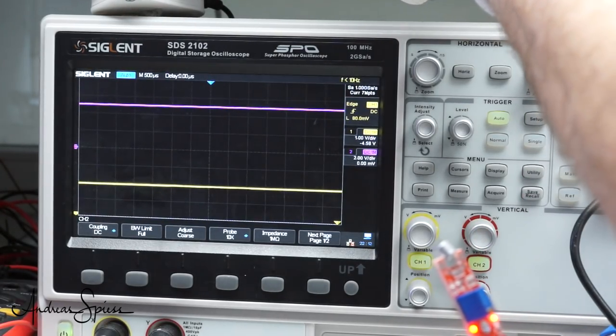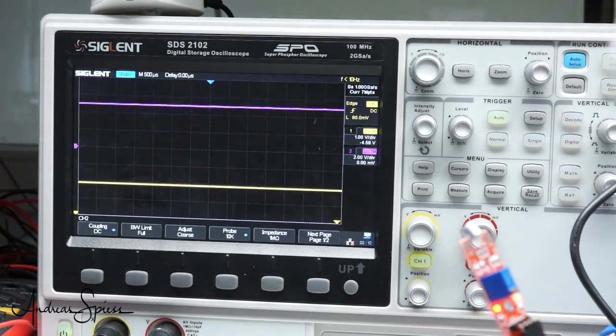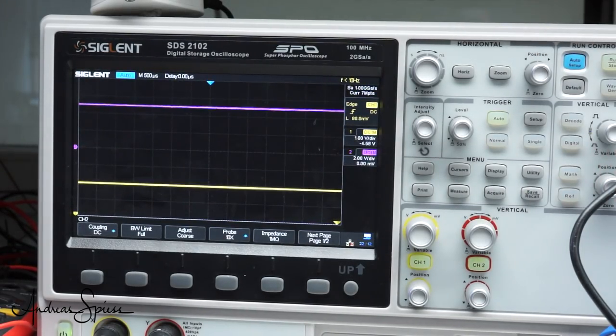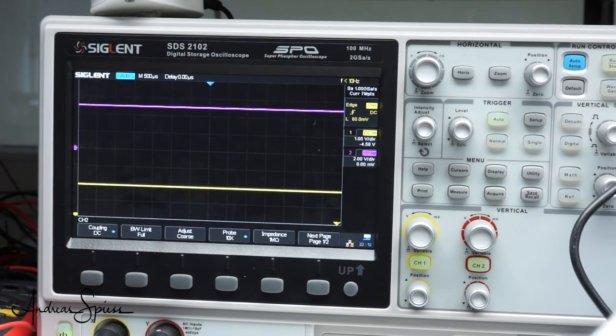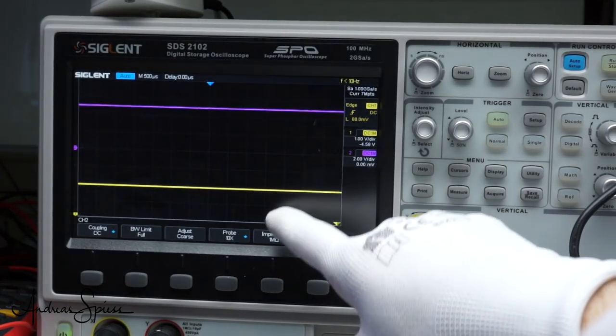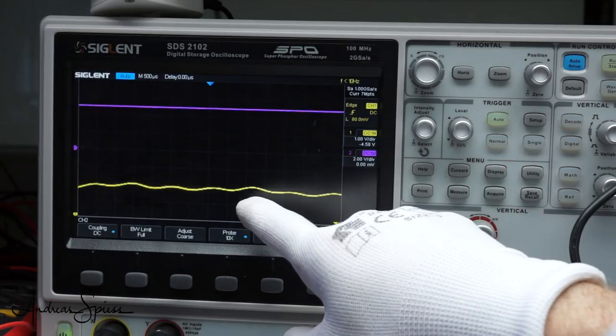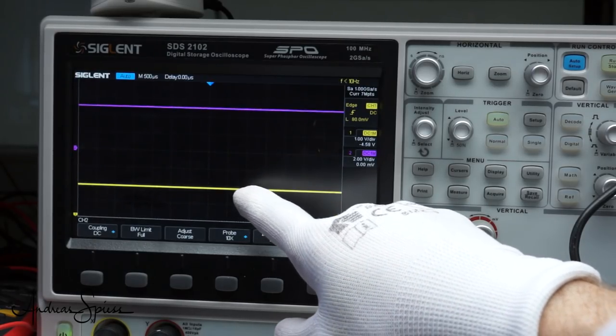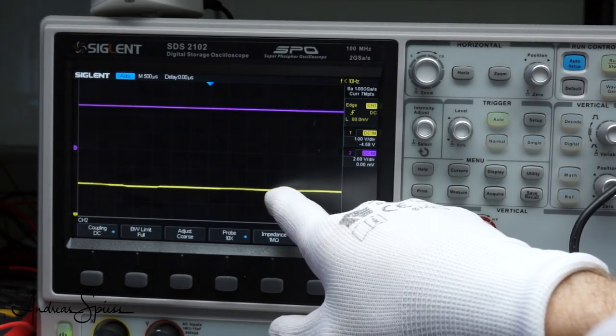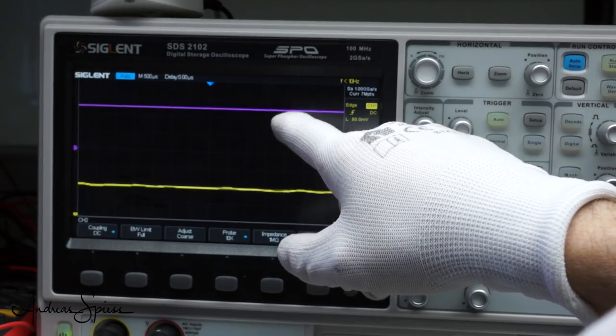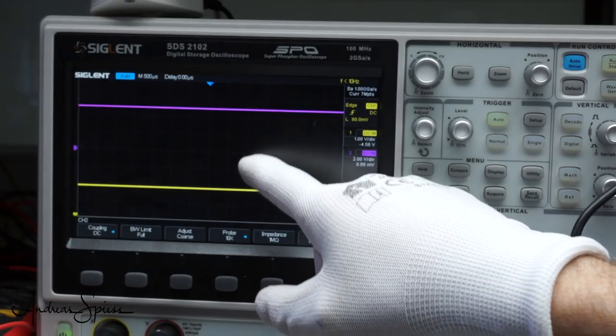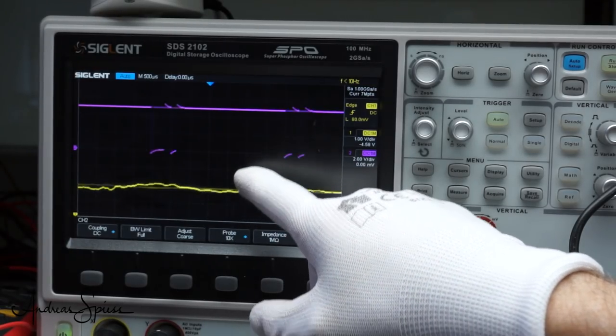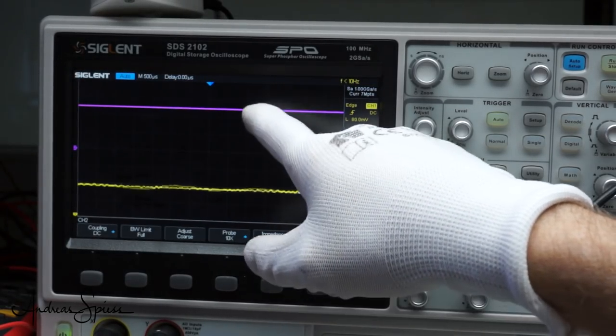We have now here the analog output and the digital output. And if I whistle. You see here the analog output. And here it's always one. And it goes to zero when the level is a little bit higher.